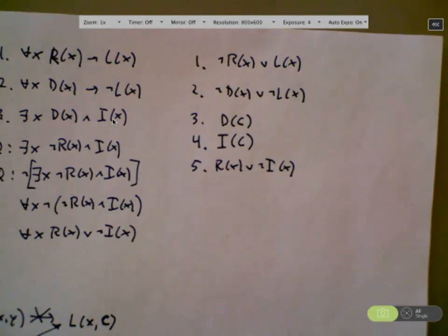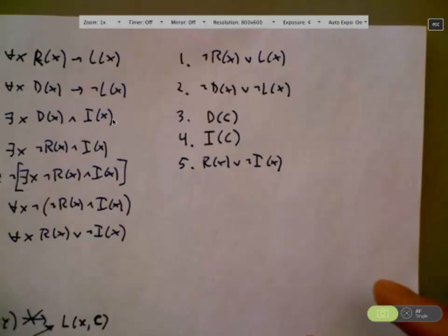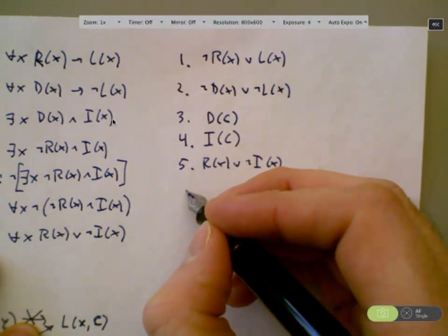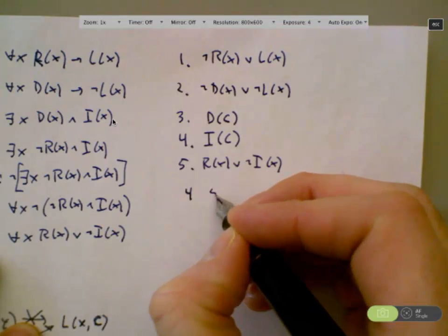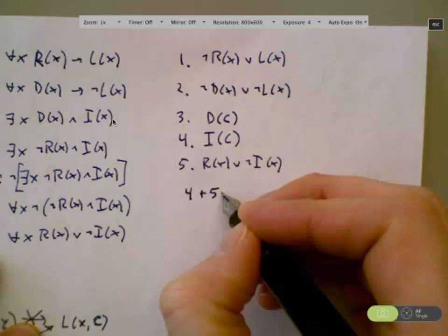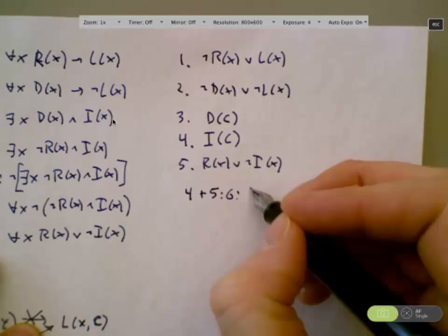Let's resolve. Get to it. Who's going to do this? We did Jeff, Jonathan. What's our first resolution? We're trying to derive bottom here. Four and five gives us six, which will be R of C.